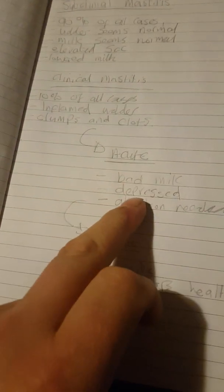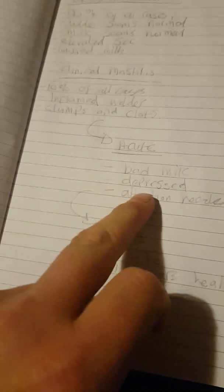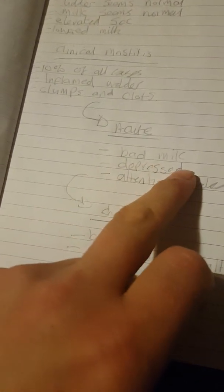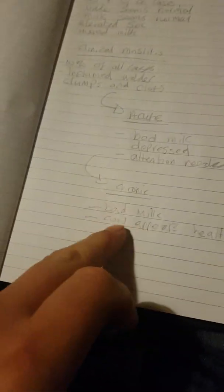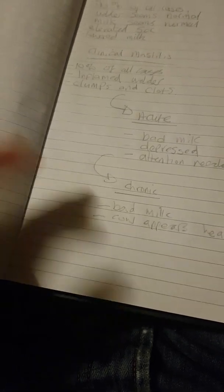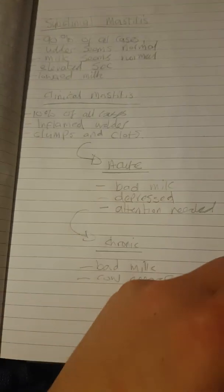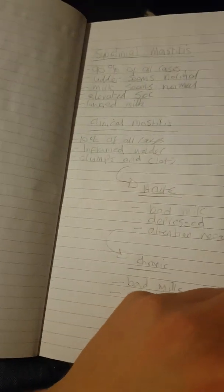Obviously you've got acute, which is bad milk, the cow's depressed, a bit moping down. Chronic is bad milk but the cow appears to be healthy. Yet again, I haven't got a clue what I'm on about, but I'm just gathering what my little brain has put together.